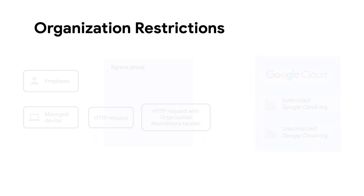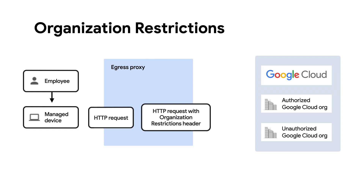Fortunately, you can now use Organization Restrictions to help mitigate these risks by setting guardrails on what resources principals in your organization are allowed to interact with, regardless of where they are granted access via IAM policies.